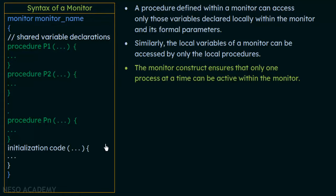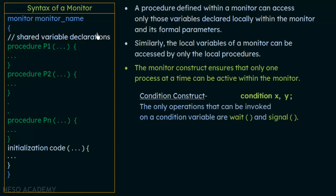This basic monitor structure with shared variables, procedures, and initialization code is not enough by itself to achieve all features of process synchronization. There is something more needed, known as the condition construct.